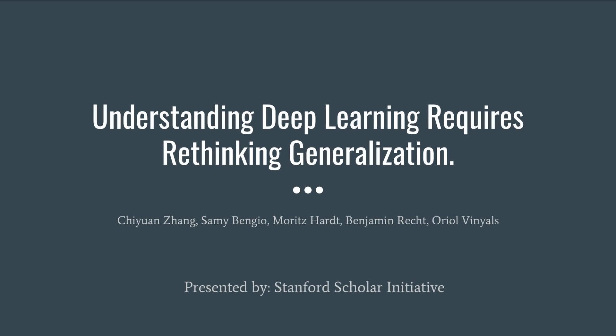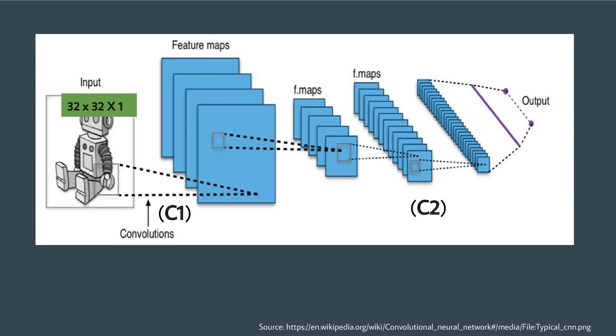Welcome to this talk about rethinking generalization to understand deep learning, presented by the Stanford Scholar Initiative. In artificial neural networks, for example, like a convolutional neural network, the number of parameters is much, much greater than the number of samples they are trained on.